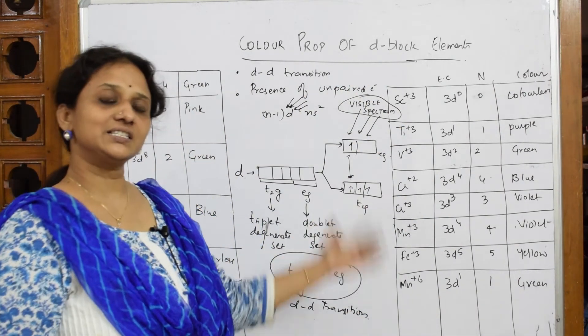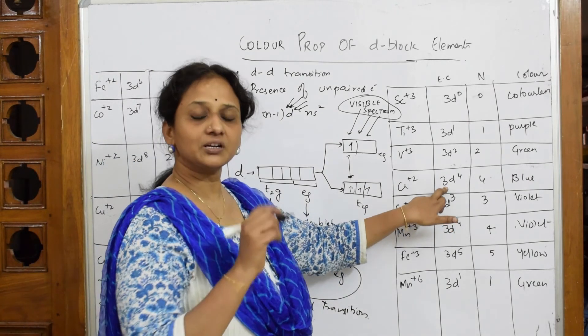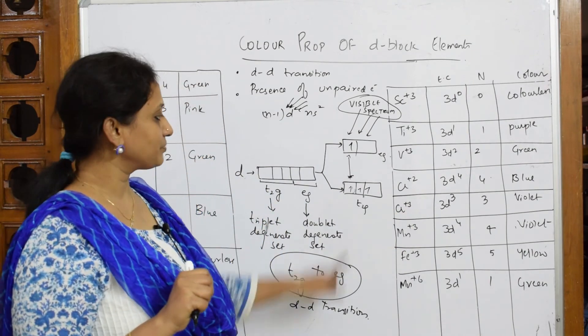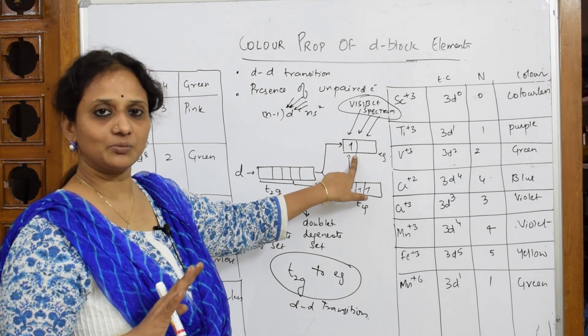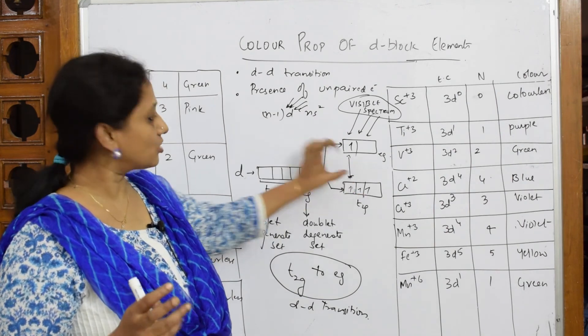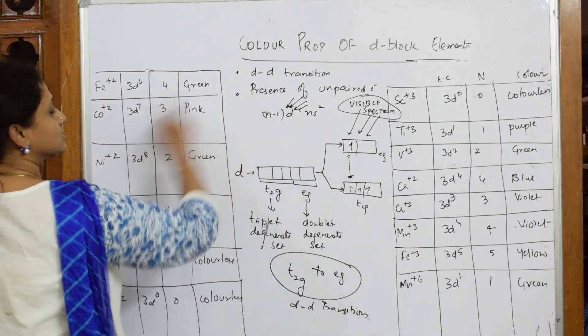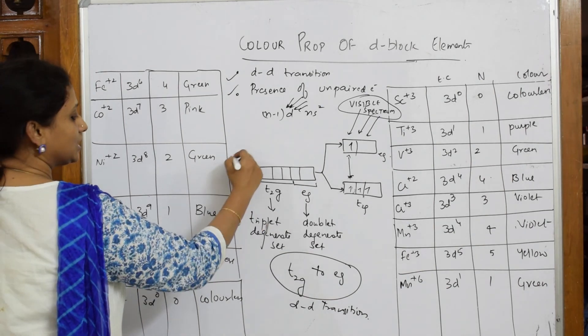Simple - whenever they ask you why is this colored or not colored, check the configuration, write the number of unpaired electrons. Because of the presence of unpaired electrons, it goes from the ground state to the excited state. They form octahedral complexes - it is t2g and eg.